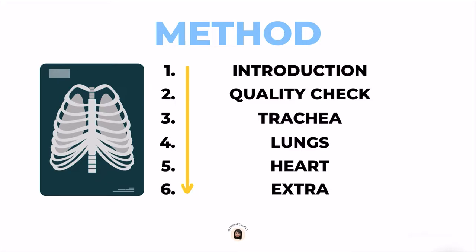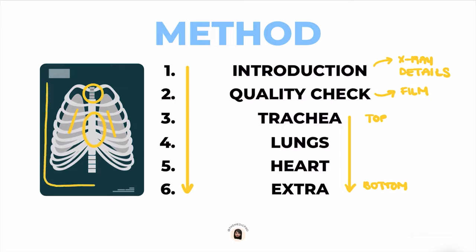We start off by doing an introduction, which is basically checking that the x-ray details match with the patient. Then we move on to a quality check to make sure that the quality of the x-ray film is adequate. If these two are okay, then we move on to the systematic organ approach, which is essentially going from the trachea, to the lungs, to the heart, and then finally assessing any extra details seen on the x-ray.